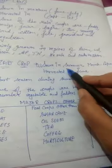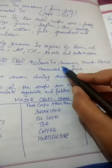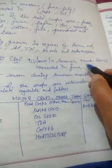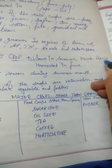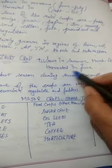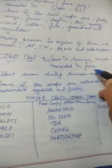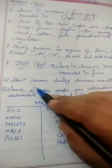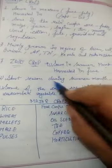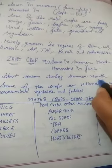Zaid crops are sown in summer, in March and April, and harvested in June. It is a short season during summer months.